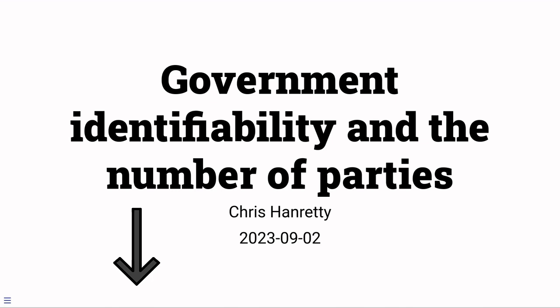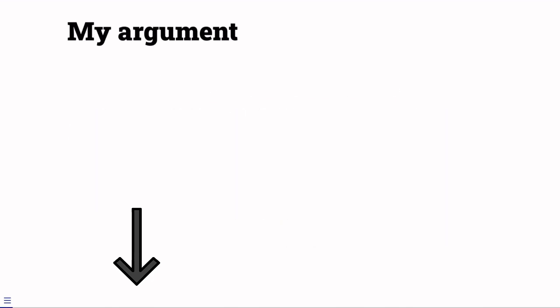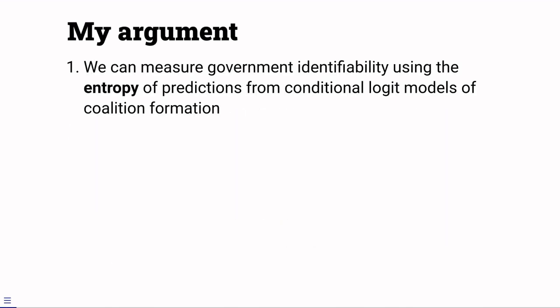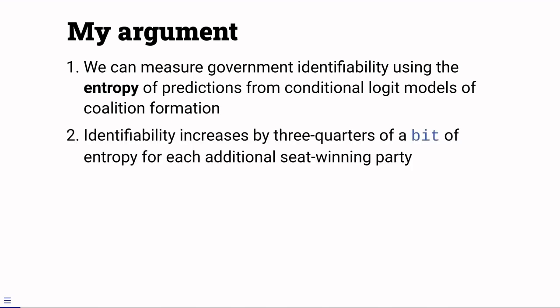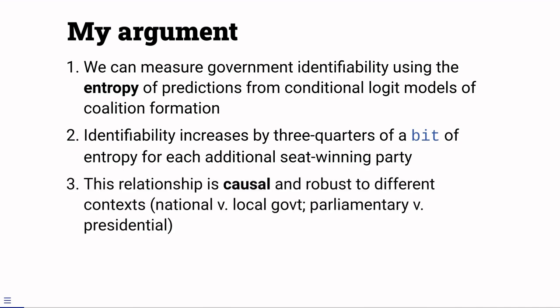I'll be making three claims. First, that we can measure government identifiability using quantities from models of coalition formation. Second, that identifiability increases linearly in the number of seat-winning parties. And finally, that this relationship is causal and that the effect is remarkably similar across different contexts.